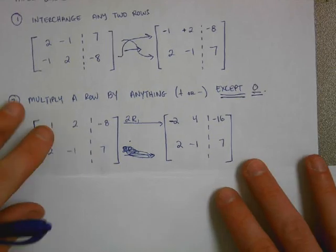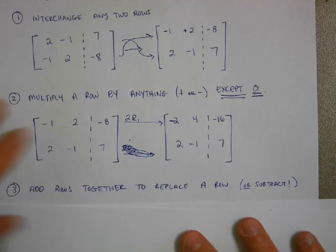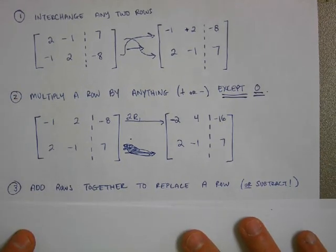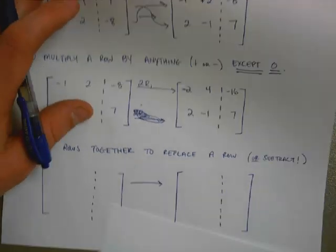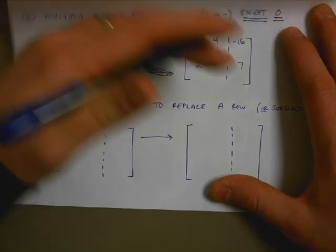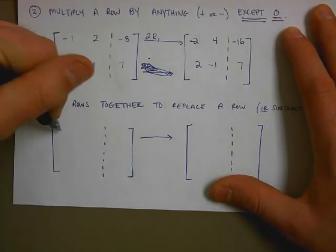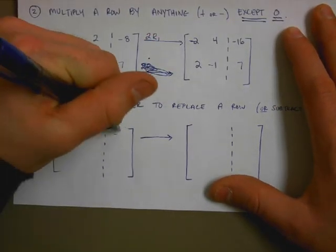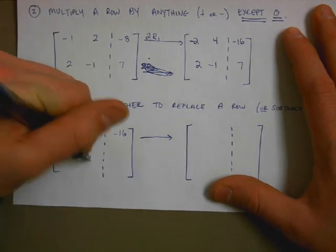And the last rule says that I can add any two rows together to replace an original row. Or I can subtract, whatever. So I can do something like this then. I can take my original rows of negative 2, 4, negative 16, and 2, negative 1, 7.